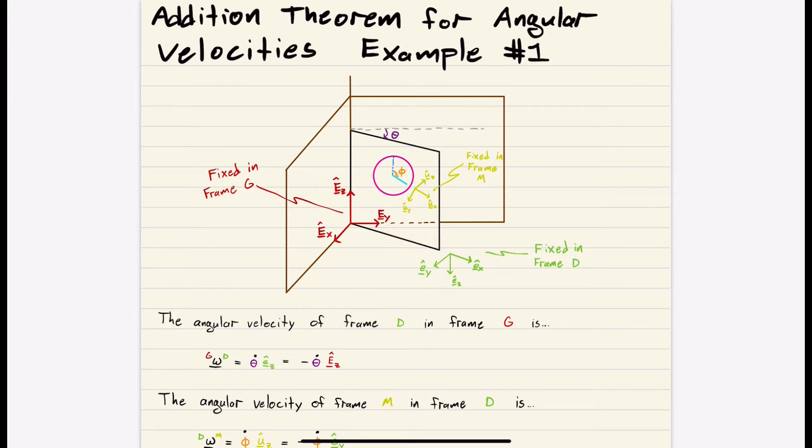And EX points along the door. It points along the base of the door, so if the door were to swing out a little further here, EX would now be pointing in this direction. We have EZ, which points straight down, and then EY is the direction EZ crossed with EX. So if you do EZ crossed with EX, your thumb would point in that direction. Right hand rule.